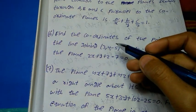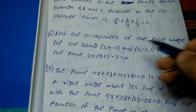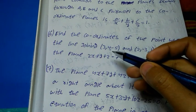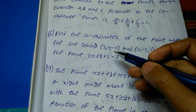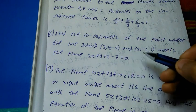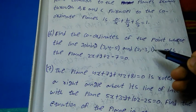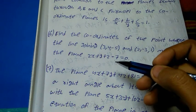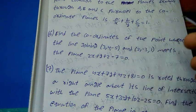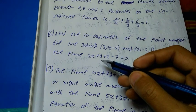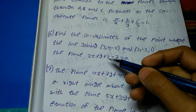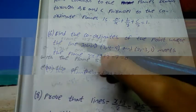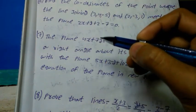Number 6 question: find the coordinates of the point where the line joining (3, 4, minus 5) and (2, minus 3, 1) meets the plane 2x plus y plus z minus 7 equal to 0.